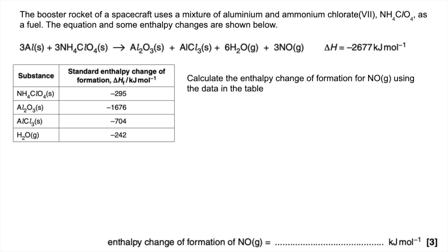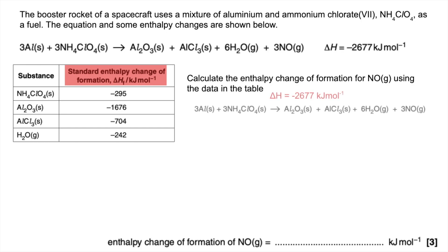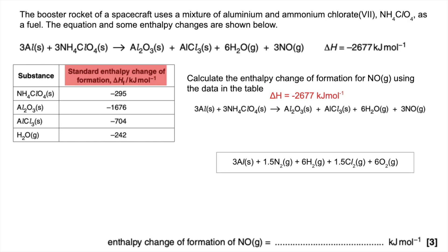The last part is the calculation — we need to calculate the enthalpy change of formation of NO. The information given is standard enthalpy changes of formation, so we'll use a Hess's law cycle. The cycle starts with the equation we want across the top. Remember the ΔH across the top is given; this time we're calculating the value for the formation of NO. At the bottom we draw a box with all the elements.